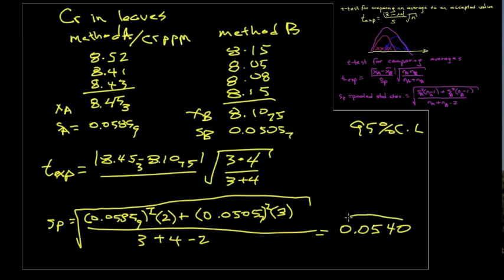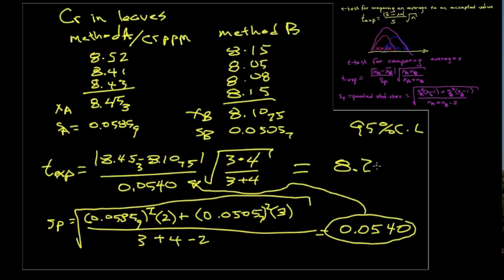So this value we move back up here to put in the equation for t, 0.0540. And we get, for an experimental value of t, a value of 8.26.